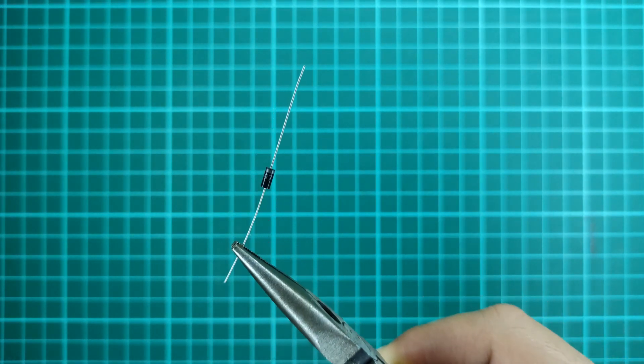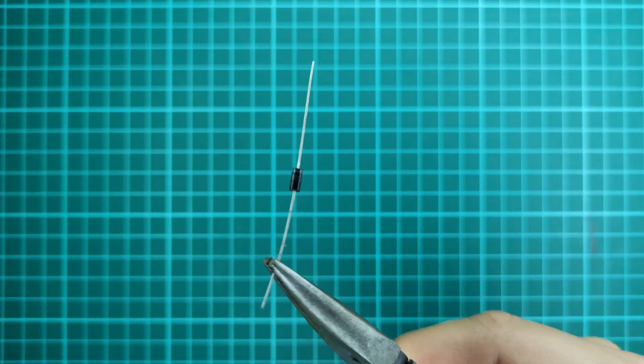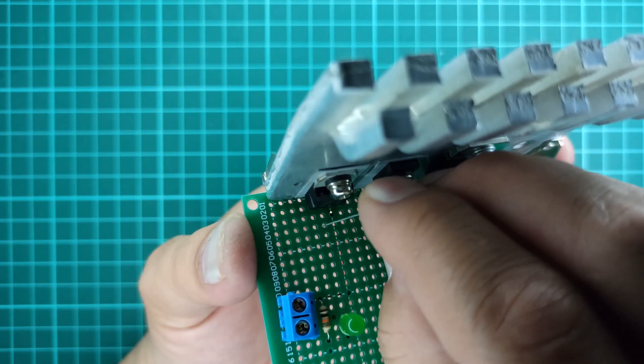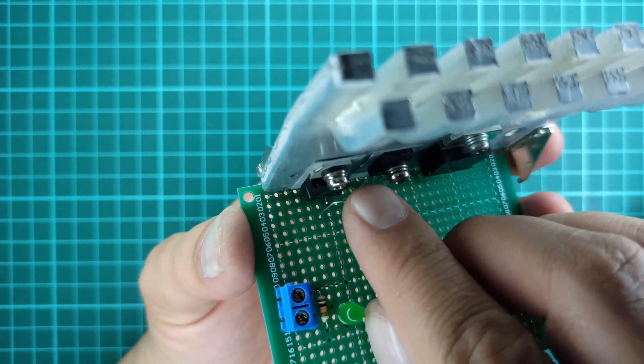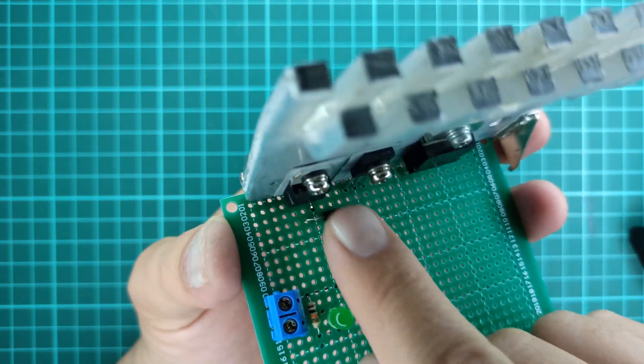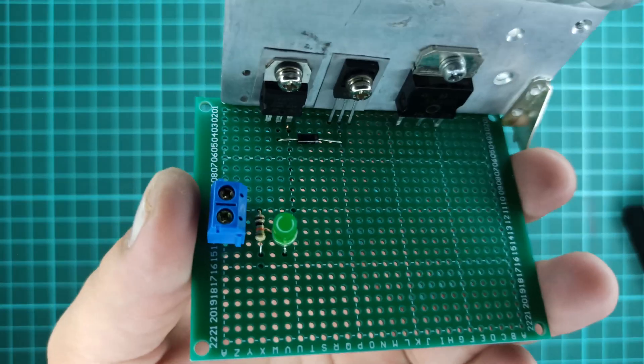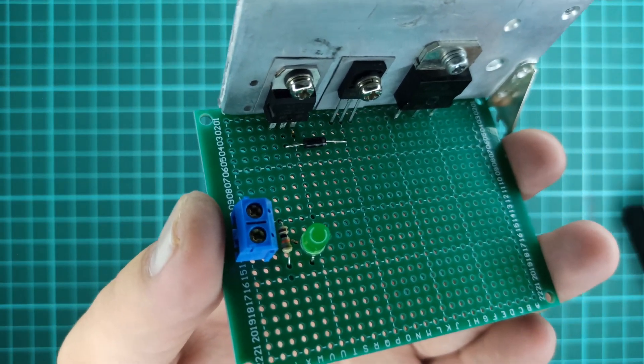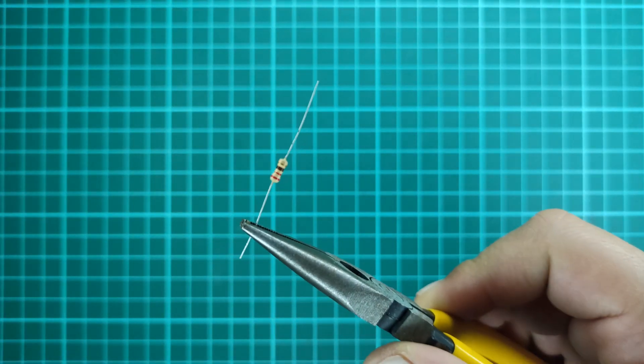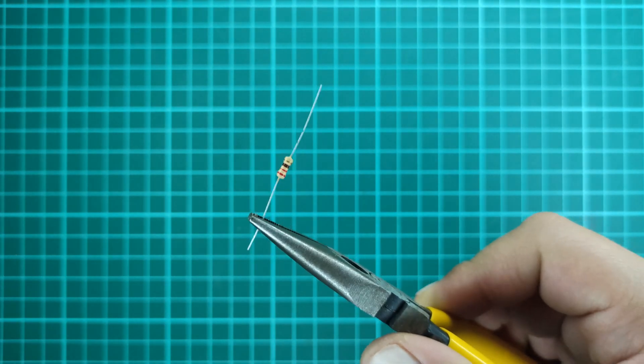Take one N4007 diode and solder it between the output of LM317 and base of BD139 as shown in the schematic diagram. Also solder the 220 ohm resistor as shown in the circuit diagram.